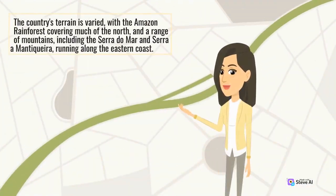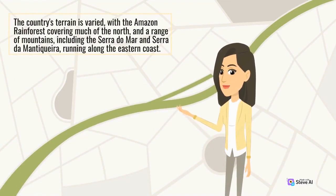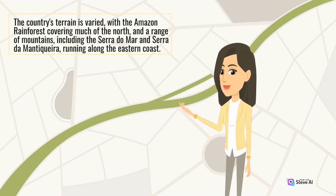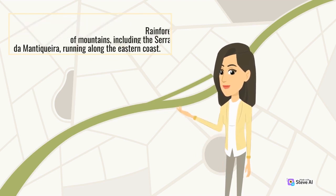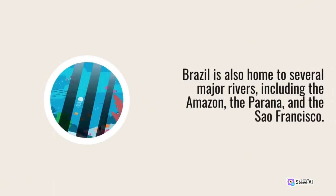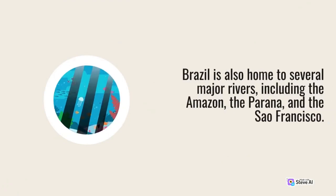The country's terrain is varied, with the Amazon rainforest covering much of the north, and a range of mountains, including the Serra do Mar, running along the eastern coast. Brazil is also home to several major rivers, including the Amazon, the Paraná, and the São Francisco.